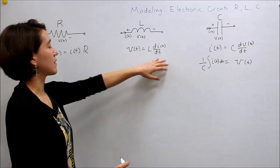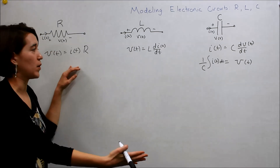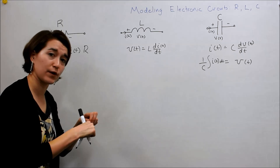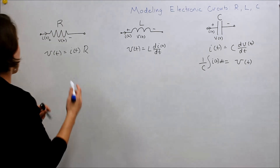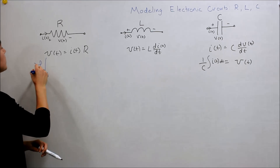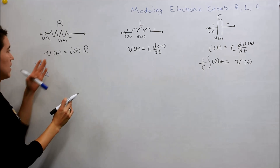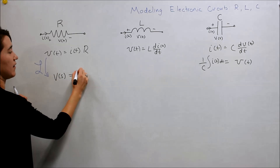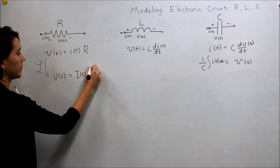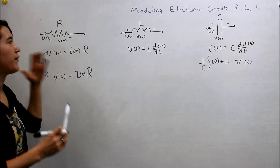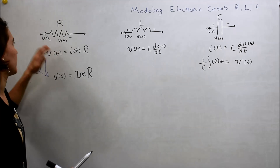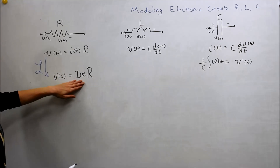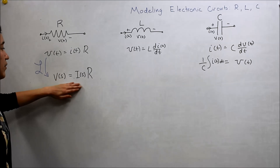So these are our base expressions for each of these components. Now we want to take the Laplace transform of them, because we're going to be moving into the frequency domain. If we do the Laplace transform for all of these, the resistor is relatively straightforward — you get V of S equals I of S times R. Our variables are the things that are variable with time, so I and V, whereas R is a constant. R just remains the same, and these change from the time domain to the frequency domain.